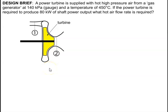A power turbine is supplied with hot high pressure air at stage one. At point one, the inlet, it generates 140 kilopascal gauge pressure and a temperature of 450 degrees. The power turbine is required to produce 80 kilowatts — that's 80 kilojoules per second of shaft power output. We want to find out how much air flow rate is required at the inlet to produce that amount of power.